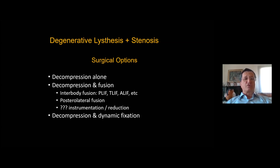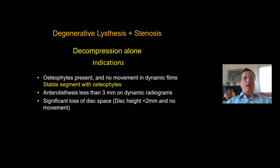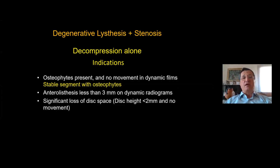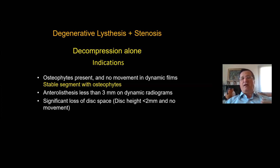If you want to perform surgery in stenotic cases, the options are decompression alone, decompression plus fusion, and decompression plus dynamic fixation. Decompression alone, even in a case with degenerative spondylolisthesis, is possible. If there are osteophytes and no movement on dynamic films, we can call it a stable segment with osteophytes or stable degenerative spondylolisthesis. These are mostly patients with significant loss of disc space.